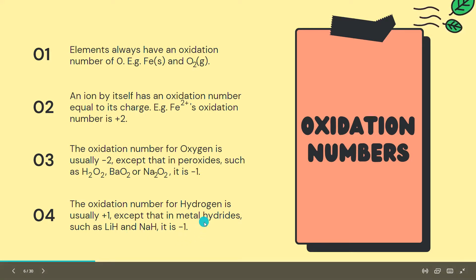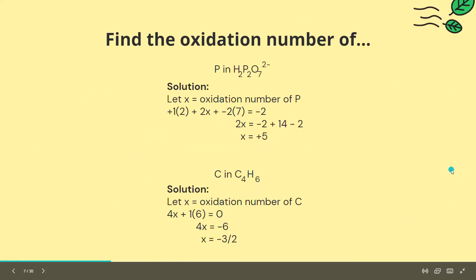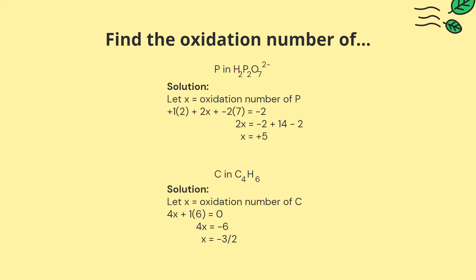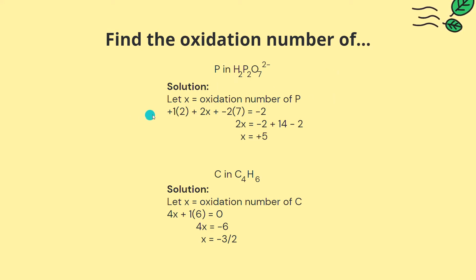Examples of metal hydrides include lithium hydride and sodium hydride. Here are some practice problems. Find the oxidation number of phosphorus in H2P2O7²⁻. If we let x be the oxidation number of phosphorus, we find x equals plus 5.